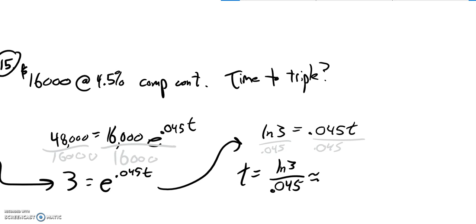And if I put that in my calculator, it's going to spit out about 24.4 years. So that 4.5% compounded continuously, it'll take about 24.5 years for whatever my investment is to triple.